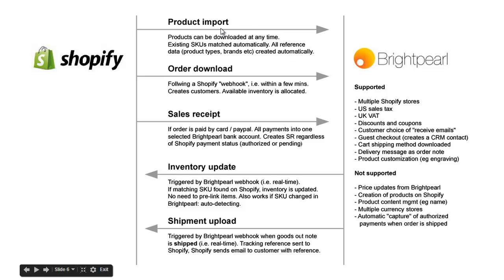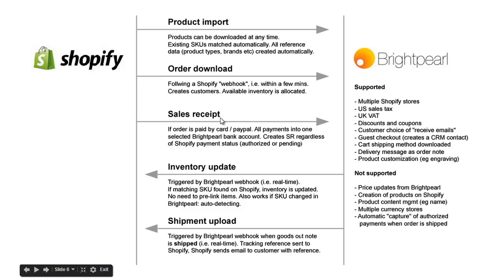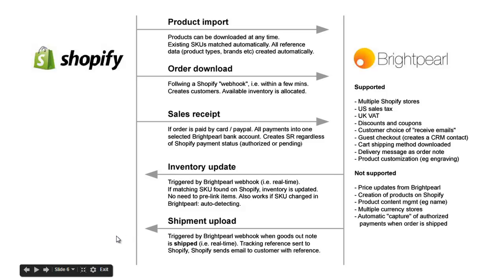As part of setup we can import products into Brightpearl, and we'll show you that at the end of this video. Once you've turned on order synchronisation, orders will be downloaded from Shopify into Brightpearl. If a customer has paid for that order by credit card or PayPal, we can create a sales receipt in Brightpearl as a payment against the order. Any time the inventory is updated in Brightpearl, we push those stock levels back into Shopify, and that relies on both systems having the same SKU for a product. When the order is fulfilled and shipped in Brightpearl, we push the shipment back into Shopify and Shopify will send the email to the customer.